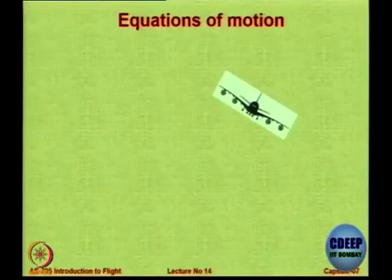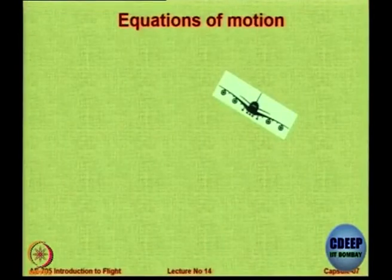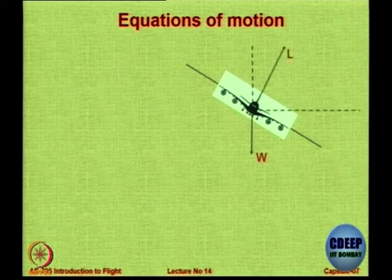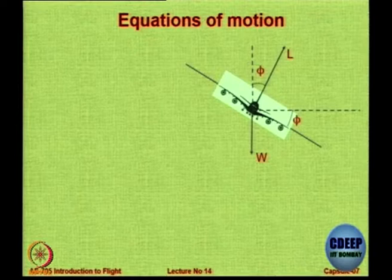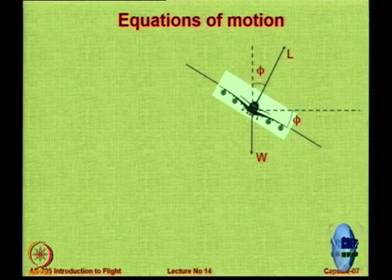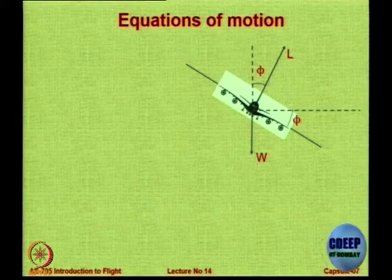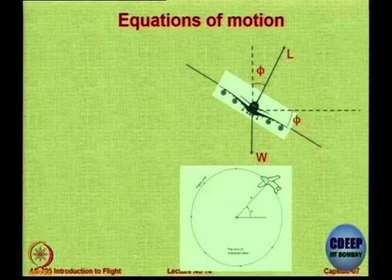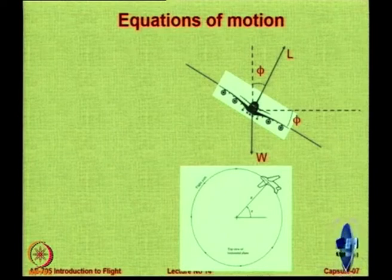Let us look at some of the turning flight equations. Here we have an aircraft — this is just a sketch, so do not assume that aircraft fly like this — which is banking at an angle phi. The lift force is going to be perpendicular to its reference line; a component of that is going to overcome the weight and the remaining component is going to give you the centrifugal force.